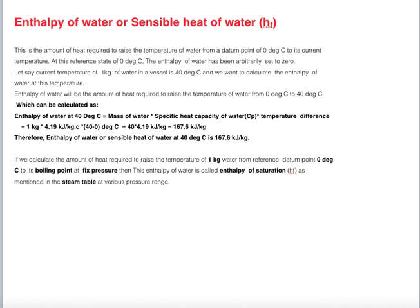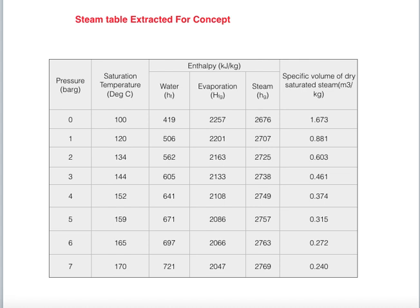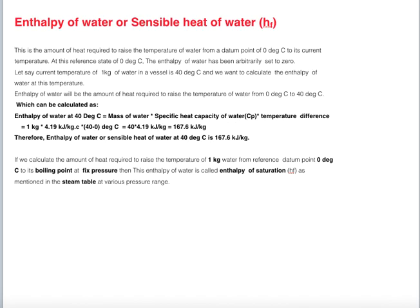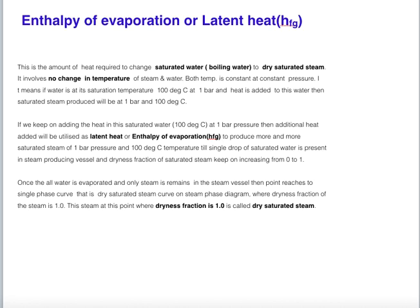If we calculate the amount of heat required to raise the temperature of 1 kg of water from the reference datum point of 0°C to its boiling point at fixed pressure, then the enthalpy of water is called the enthalpy of saturation, denoted by HF as mentioned in the steam table at various pressure ranges. From the steam table values shown, we can see that the enthalpy of saturation of water increases as pressure increases.